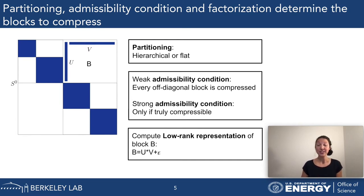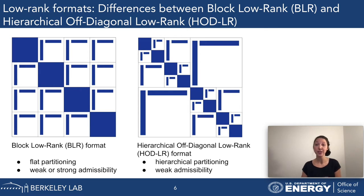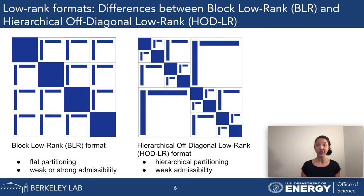The two low-rank formats we will look at today are the block-low-rank (BLR) format on the left, and the HODLR—hierarchical off-diagonal low-rank—format on the right. The block-low-rank format uses a so-called flat partitioning, meaning we partition this matrix into clusters immediately.